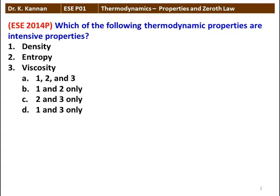The first question: which of the following thermodynamic properties are intensive properties? The three properties are density, entropy, and viscosity. The options are: all three are intensive properties; 1 and 2; 2 and 3; or 1 and 3. Density and viscosity are intensive properties, independent of mass of the system, and entropy depends on the mass — it is an extensive property. The correct answer is 1 and 3.